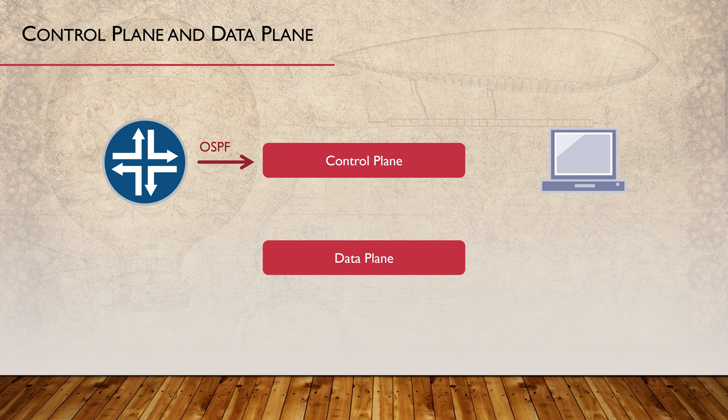And everything needs to be managed with SSH, SNMP, HTTP, or some other protocol. These types of traffic are sent to or from a switch or router, not through it. This is not transit traffic. Instead, this is called exception traffic. Network devices need to receive, process, and reply to exception traffic. This is handled in the control plane.